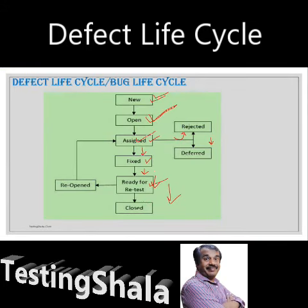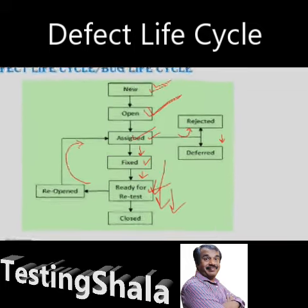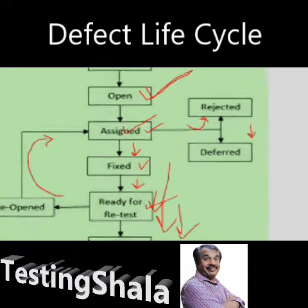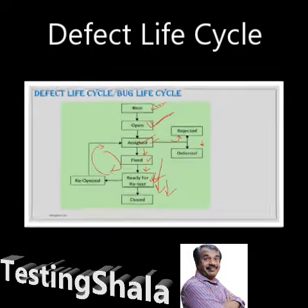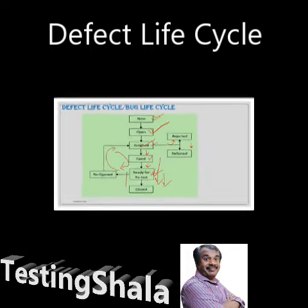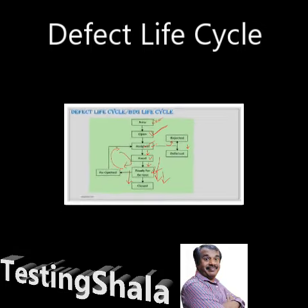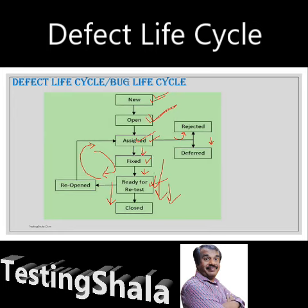If the defect that was marked as fixed is not really working, it will be 'reopened,' and the developer team will work on it again until the issue is either fixed or deferred to future releases. That's all about the defect life cycle of a bug or defect.